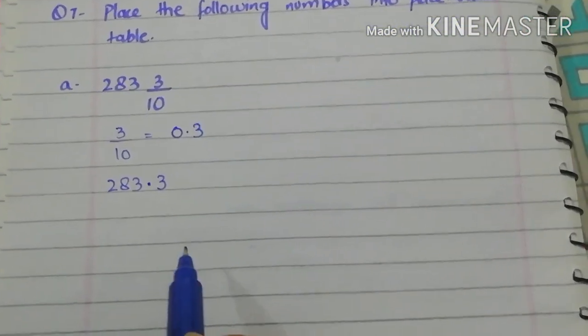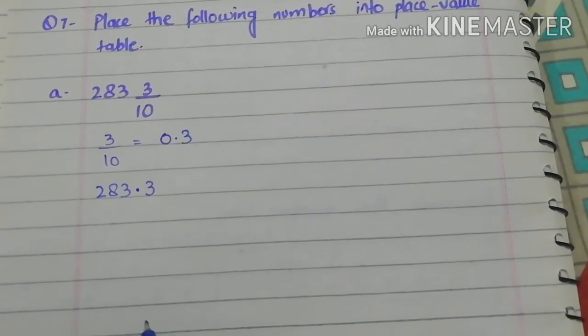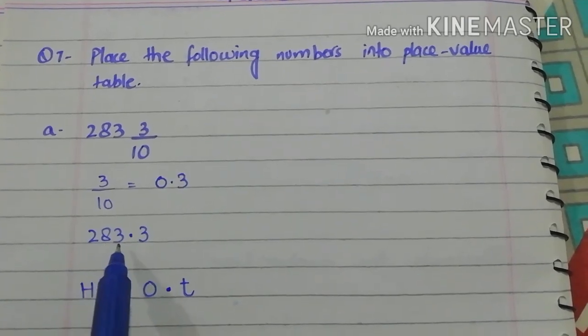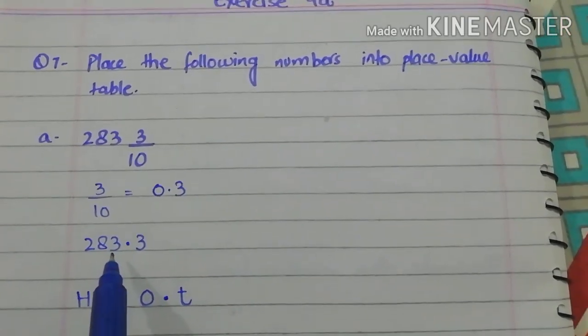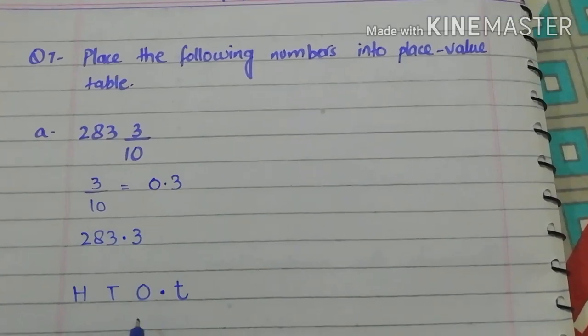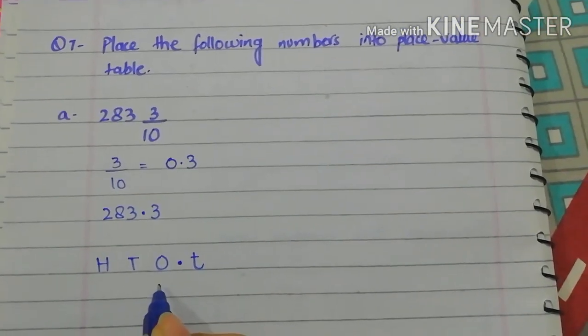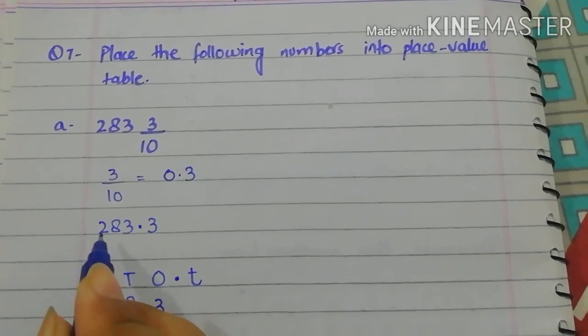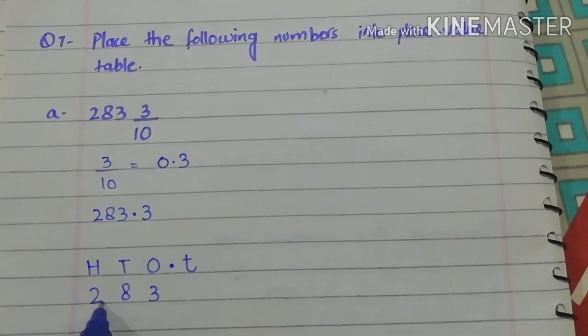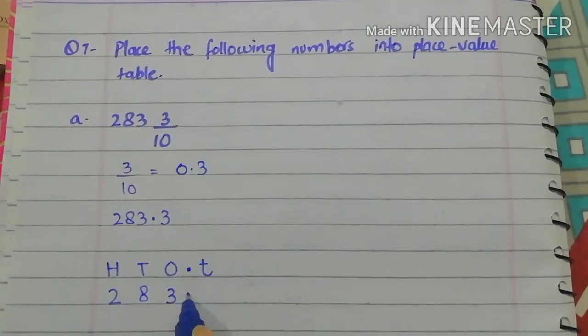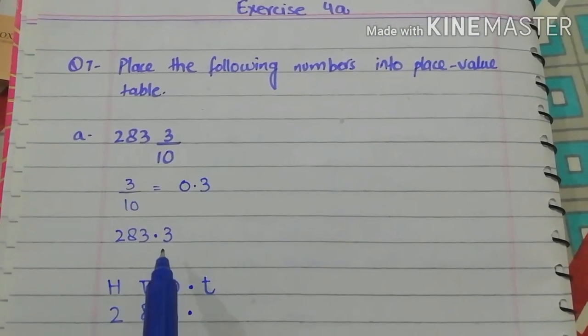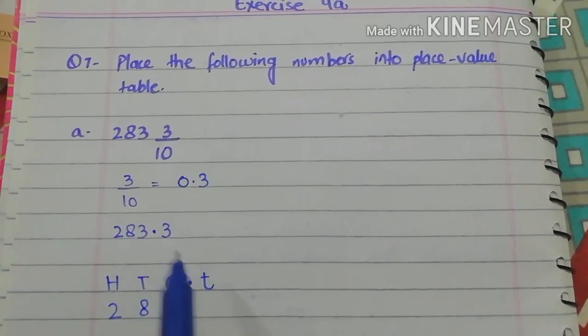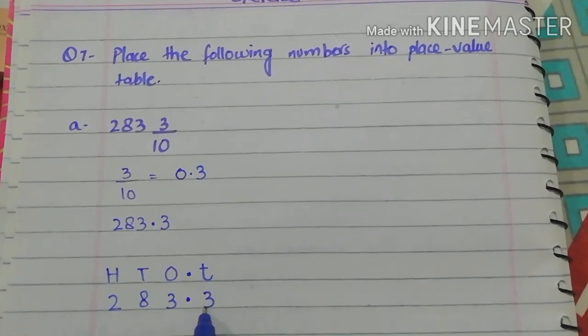Now, make a place value chart and put these values. Now, before decimal we have three values. 283.3. So, the value of 3 is 1's. So, we put 3 in 1's place. 8 is in 10's place. And 2 is in 100's place. So, put the decimal here. And after decimal we have one value. That is 3. And the place value of 3 is 10's. So, put here.